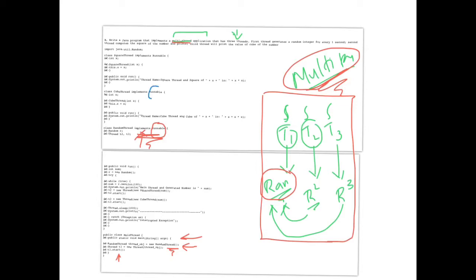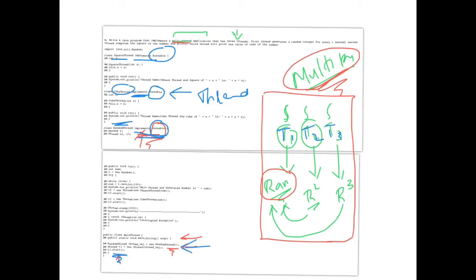Runnable is a particular interface which is implemented to indicate that you are creating a thread. You can see here — T1 is creating a random thread, T2 is creating a square, and T3 is creating a cube. When you call T1.start(), that is the initialization or creation of the first thread. When the first thread is called, it is for randomizing the number, and from within it, threads T2 and T3 are also created.